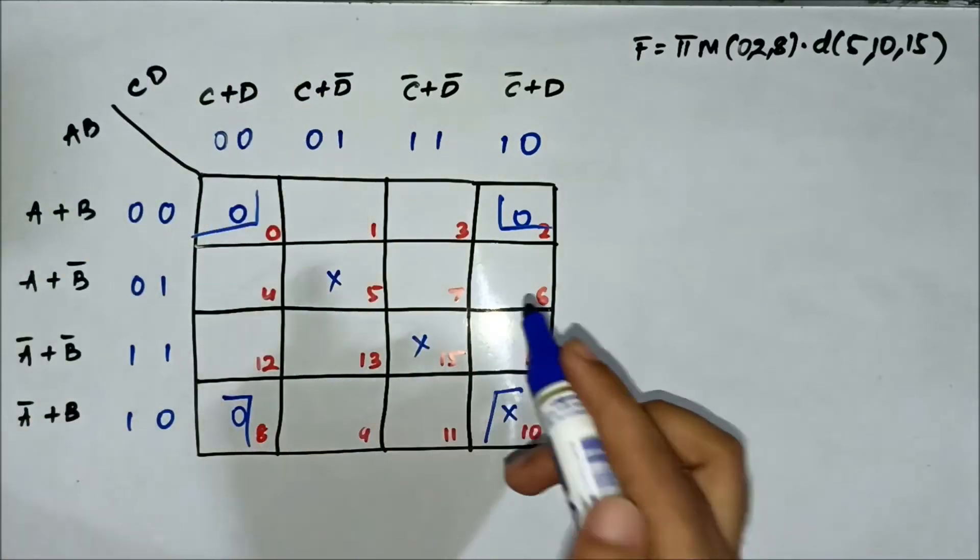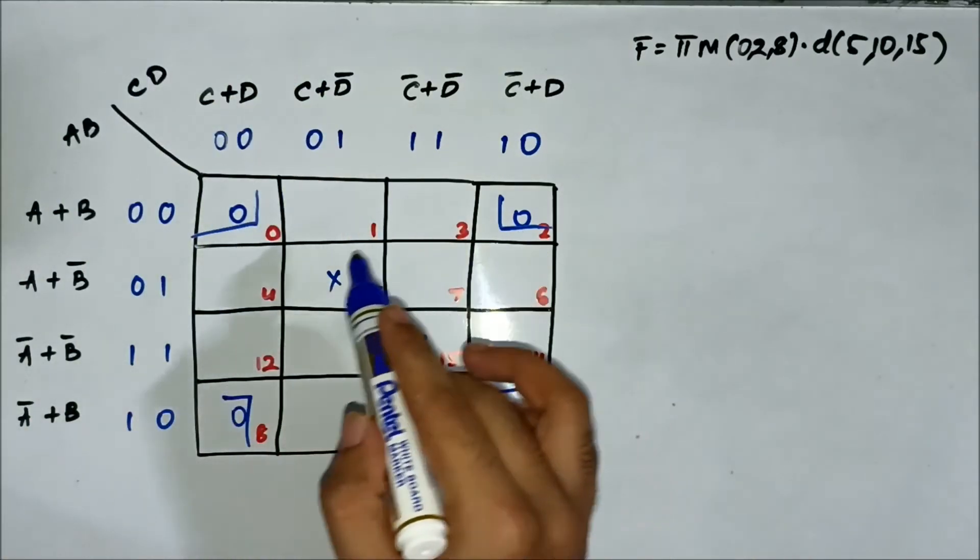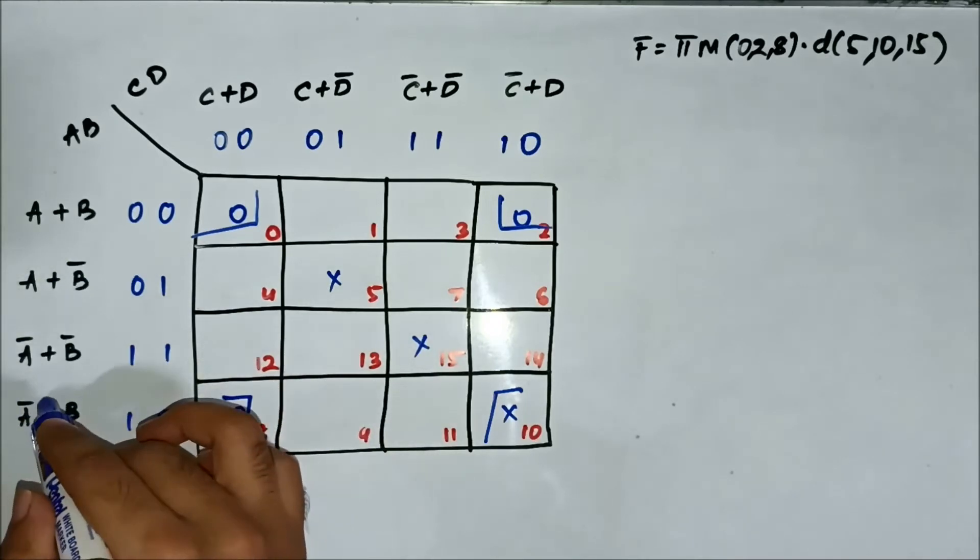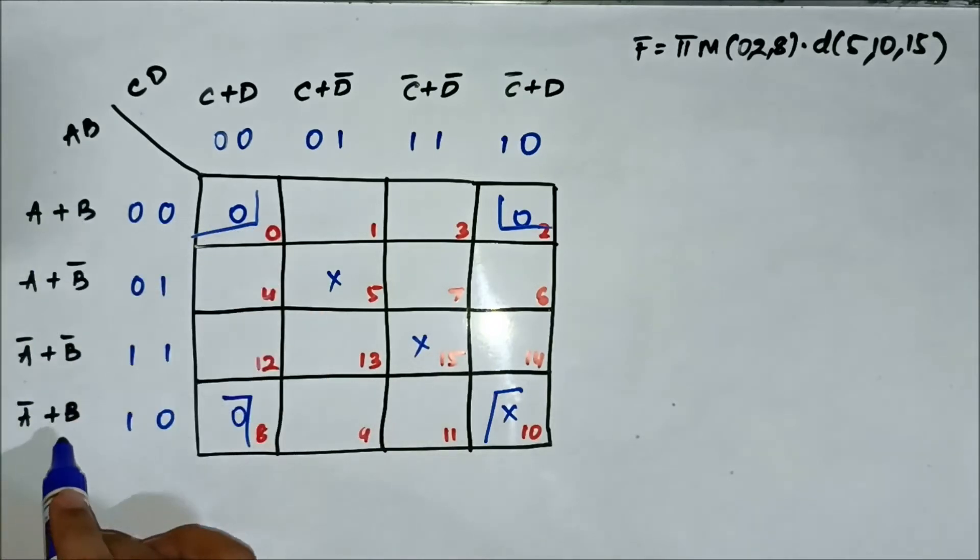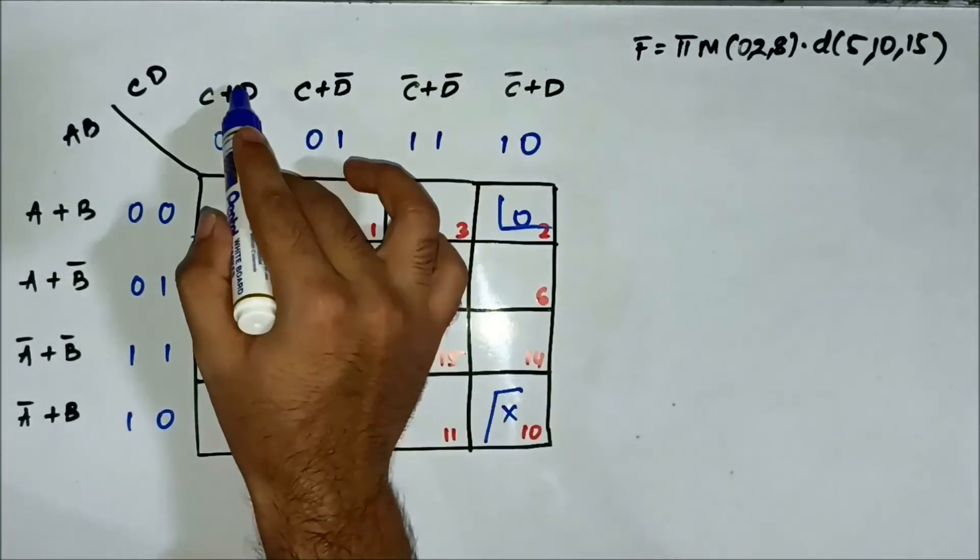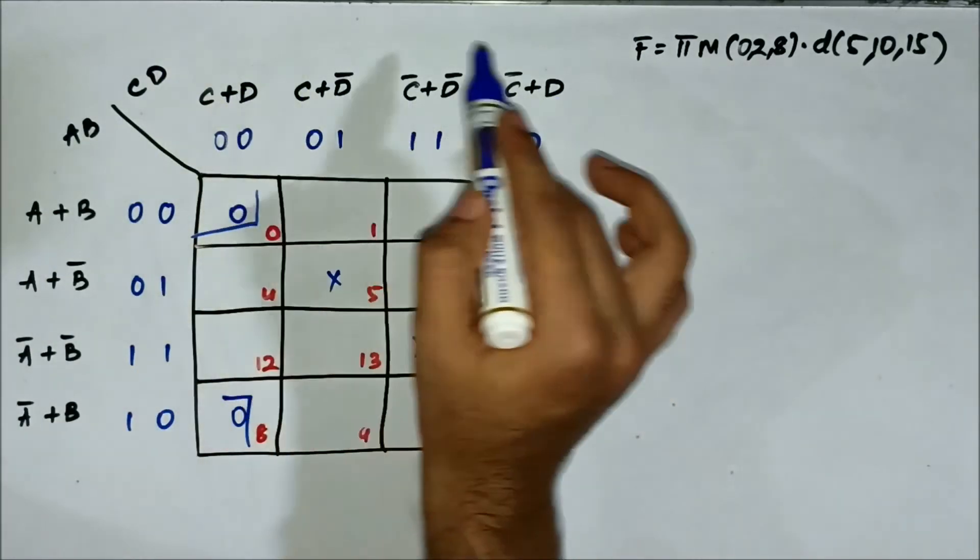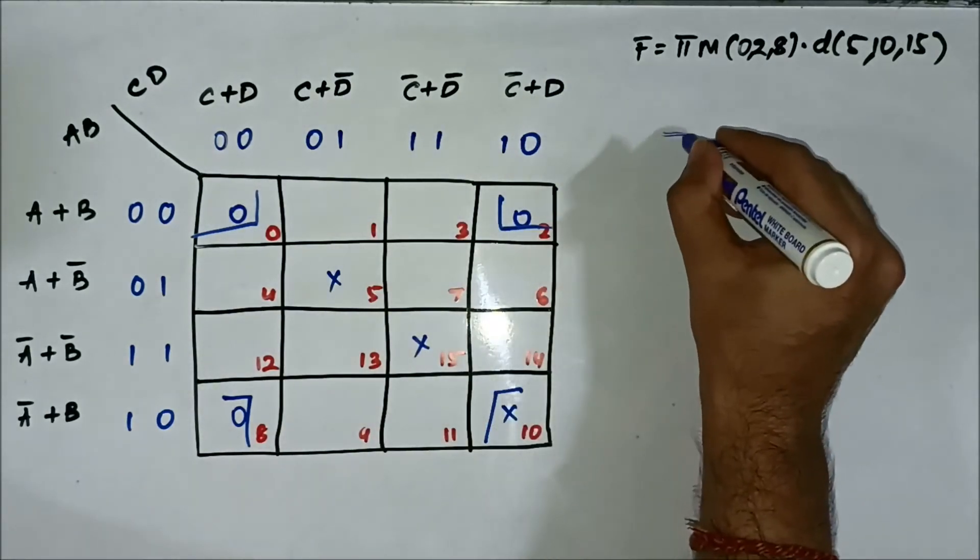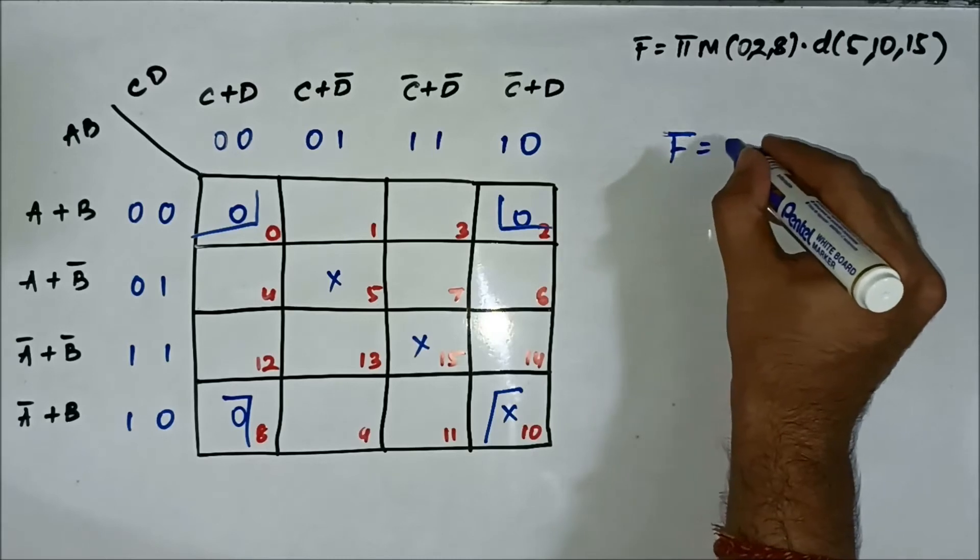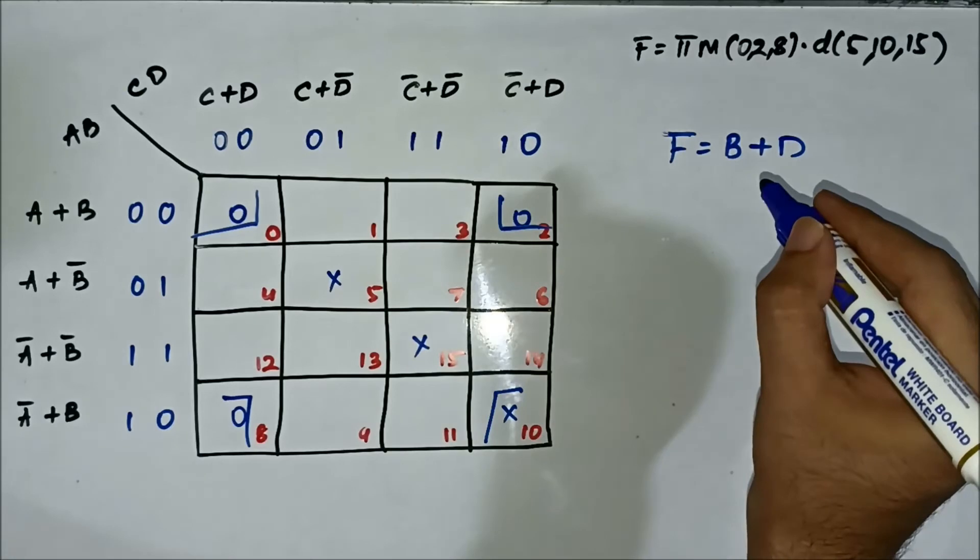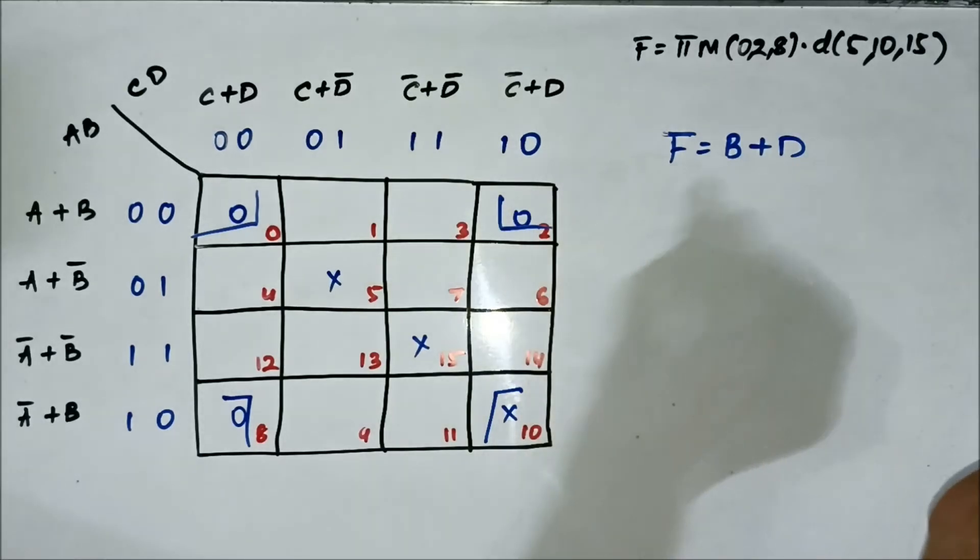The quad and the common variables from this quad are the horizontal side that is B. B here and B here and B here and the vertical side it is D. Here D, here D. So the simplified boolean expression is B or D. The simplified boolean expression is B or D.